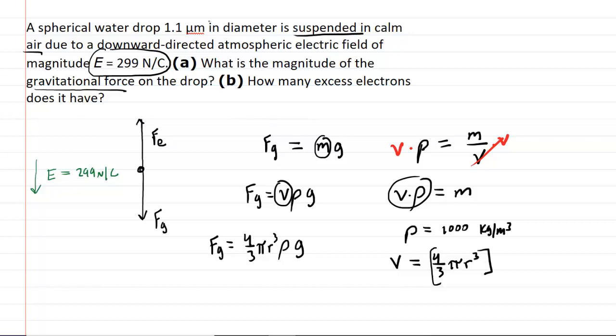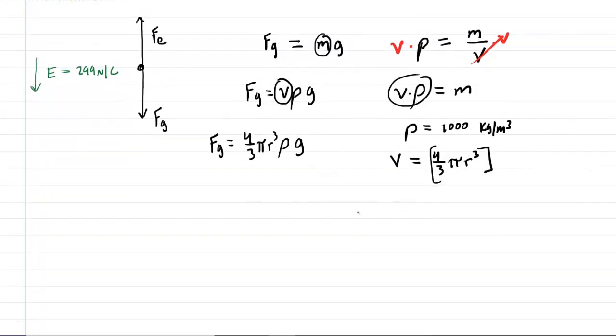Now, everything here is known because the question gave us the diameter. So if we have the diameter, then, of course, we can get the radius. Just be a little careful here. So radius is equal to diameter divided by 2. So we would plug in the 1.1 micrometers for the diameter and then divide that by 2.